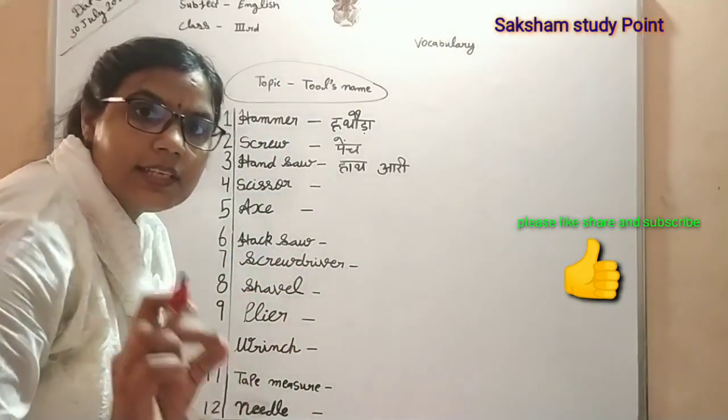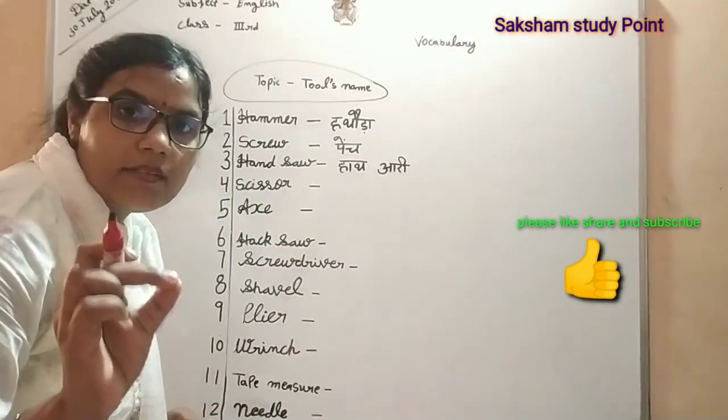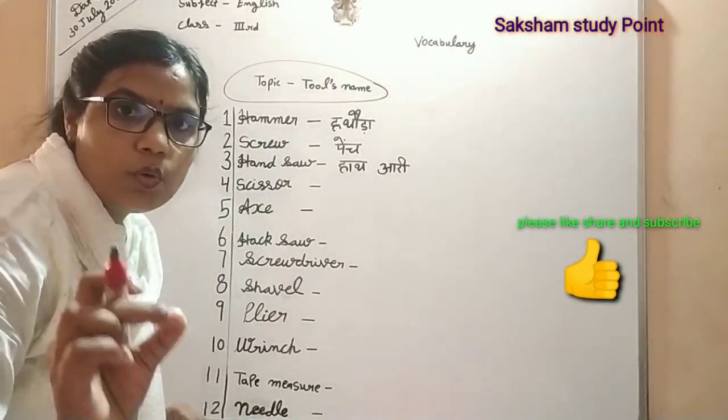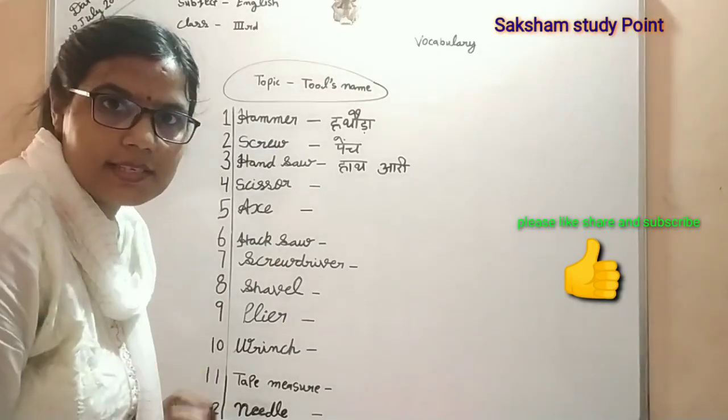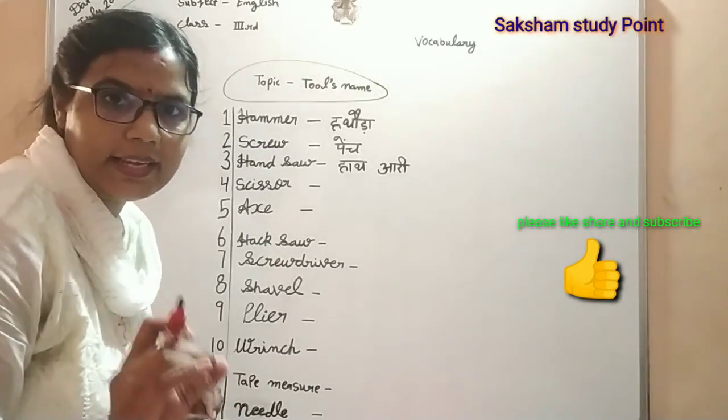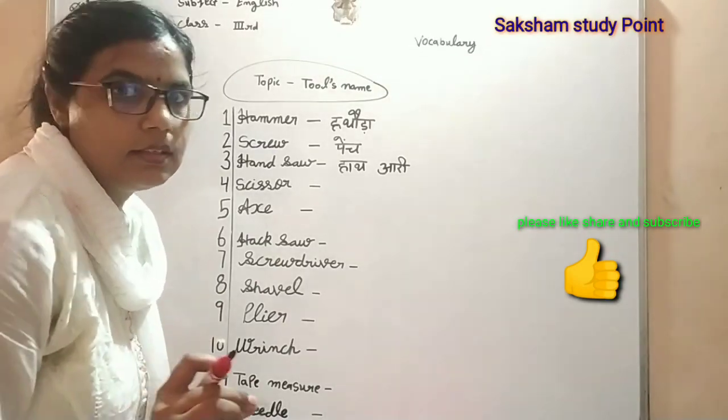S-C-I-S-S-O-R, scissor. Scissor means hota hai — kainchi.